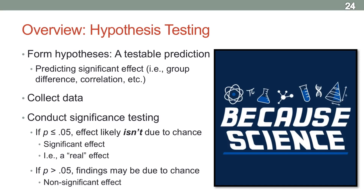If p is at or below 0.05, there's a 5% chance or less that the effect is just due to chance or random variation in the data — meaning there's a 95% likelihood or more that this is a real effect. That's when we call the effect significant and say it's probably real in the real world. But if p is greater than 0.05, it's too likely the effect could be due to chance, so we call that a non-significant effect. It could still be real, but we don't have good enough evidence yet.